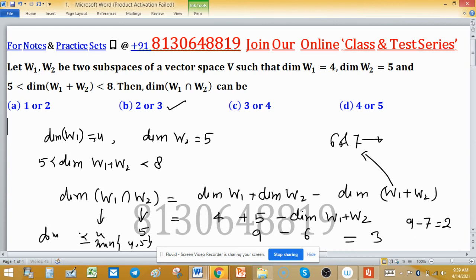You can understand this one, because dimension of intersection will be less than, not exact, less than equal to 4 and 5. Using this fact, we can eliminate option D directly, because dimension 5 is possible. Possibility of dimension of intersection is 5 here, so option D discard here, and correct option is B.